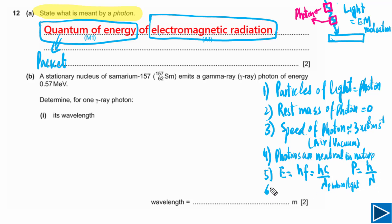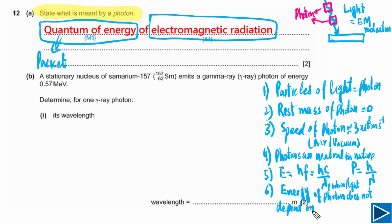A very important property: the energy of a photon does not depend on the intensity of light — it is independent of intensity. Energy of photon depends on the frequency of light and on the wavelength of light. This independence from intensity is a key concept that appears frequently in past paper questions.